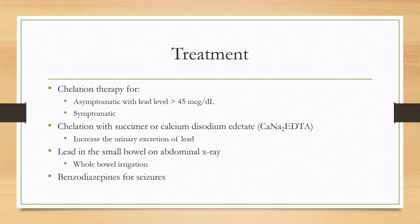Treatment is generally given to asymptomatic patients with a lead level greater than 45, or to symptomatic patients. Chelation is done with succimer or calcium disodium edetate, which increase the urinary excretion of lead. If the abdominal X-ray shows sources of lead such as specks in the small bowel, whole bowel irrigation is performed. For seizures, benzodiazepines are the treatment of choice.